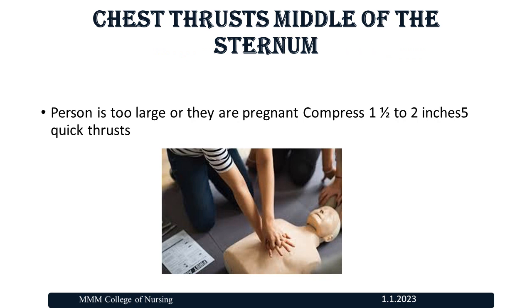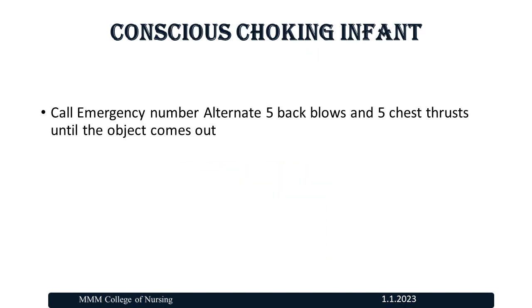Chest thrusts: place hands at the middle of the sternum. Use this method if the person is too large or they are pregnant. Compress only 1 to 2 inches with 5 quick thrusts. For a conscious choking infant: call the emergency number and alternate 5 back blows and 5 chest thrusts until the object comes out.